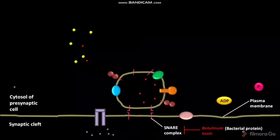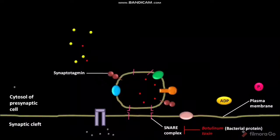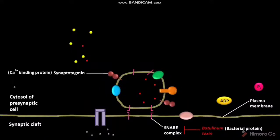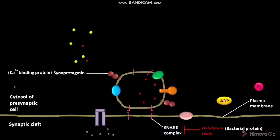The membrane of the uncoated synaptic vesicle has another protein called synaptotagmin. Synaptotagmin is a calcium ion-binding protein. The synaptotagmin prevents the fusion of the membrane of the uncoated synaptic vesicle and the plasma membrane of the presynaptic cell, and so prevents the release of neurotransmitter.